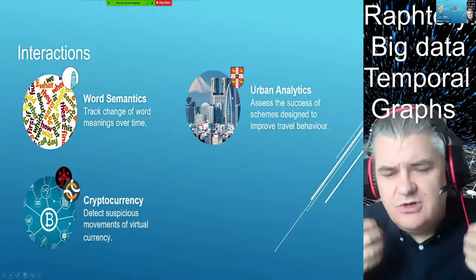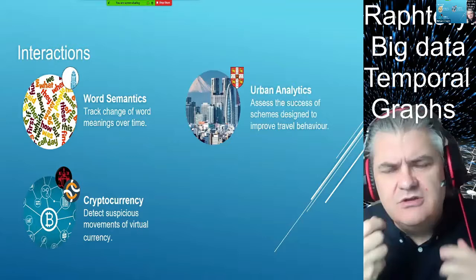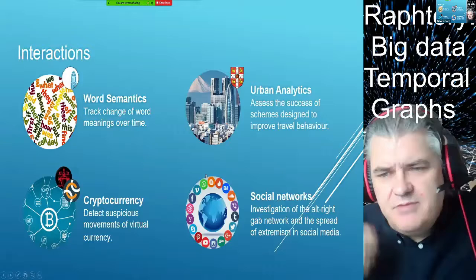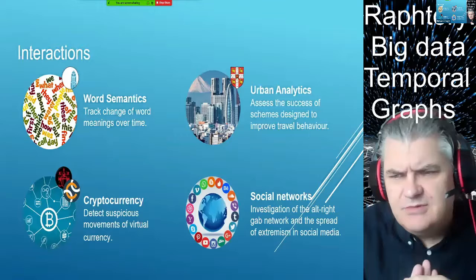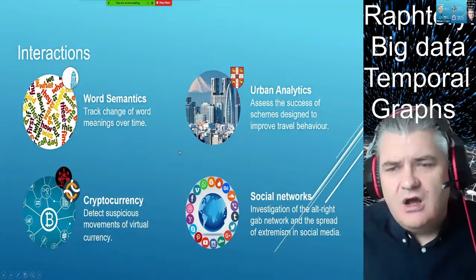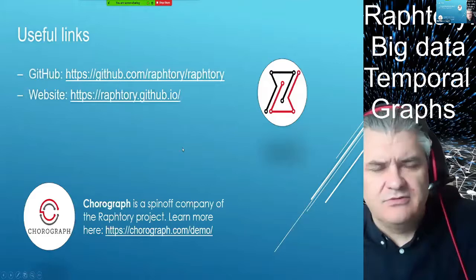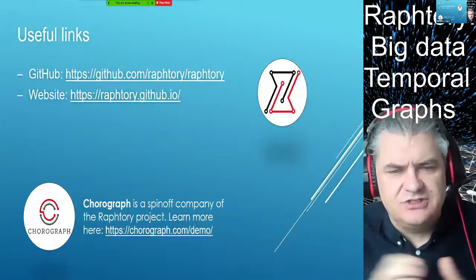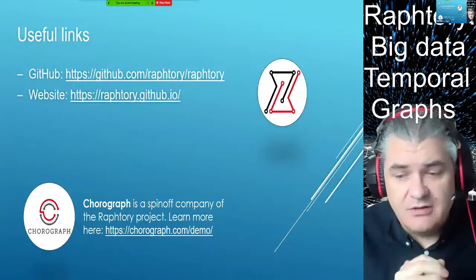We're also looking at cryptocurrency, where nodes are people and links are Bitcoin transactions between them. We have a system that is state of the art at identifying when transactions represent attempts to obfuscate money movement, working with City University and a company called Chainalysis. For urban analytics, we're working with the Institute for Transport Studies at Leeds, assessing schemes designed to influence how people travel. We've also been looking at the Gab social network, used by those too extreme for Twitter, examining how extremism spreads on social media. There's a GitHub page, a website, and a spin-out company called Choreograph with three employees pushing the open source project forward.